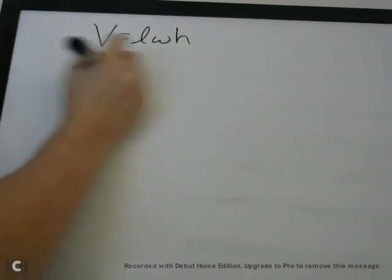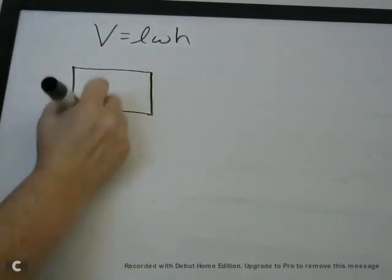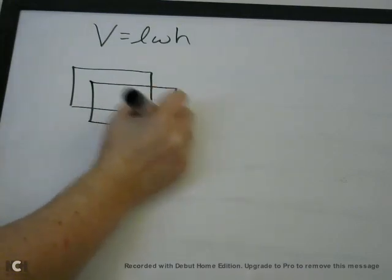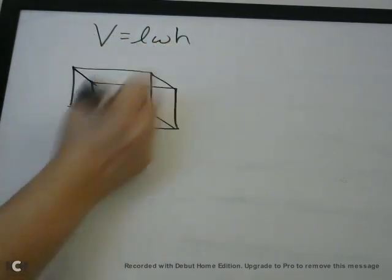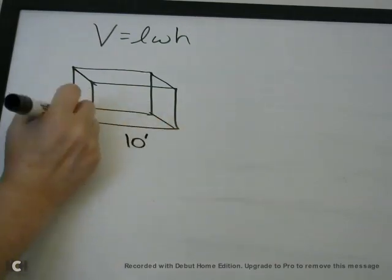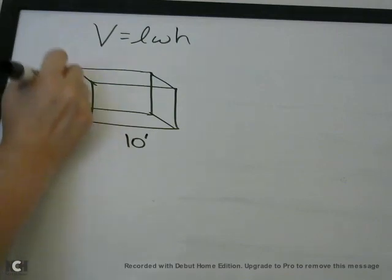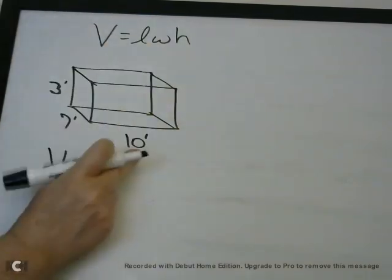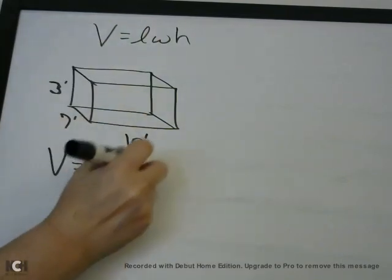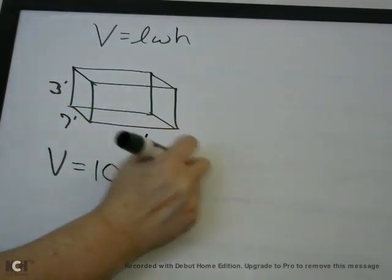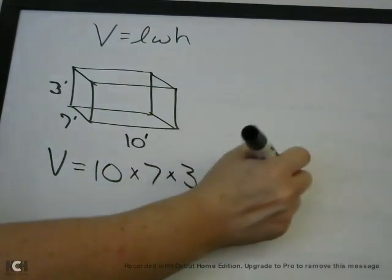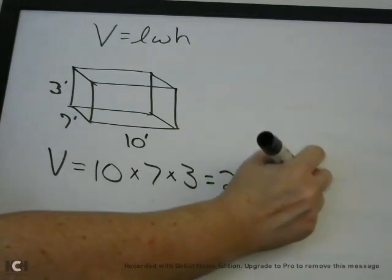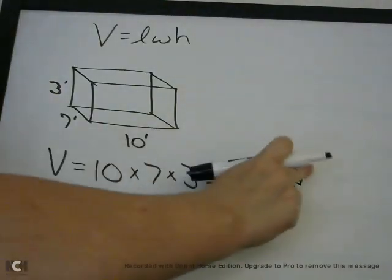A rectangular prism is just a box. So let's say we have a box — this is not going to be drawn to scale — but let's say we have 10 feet by 7 feet by 3 feet. It asks: what is the volume of this rectangular prism? Pull out your formula sheet. Volume equals length, which is 10, times width, which is 7, times height, which is 3. Put that in your calculator, you get 210. This is in feet.